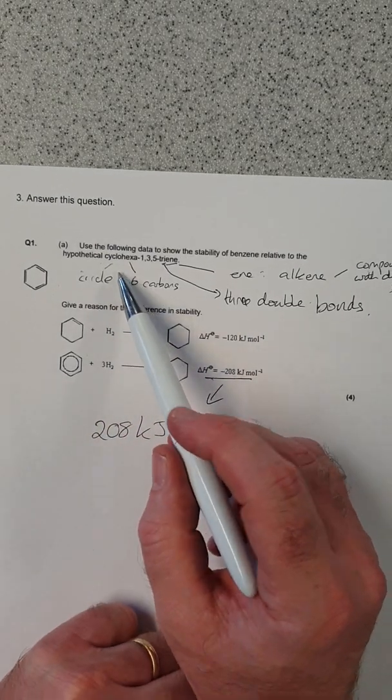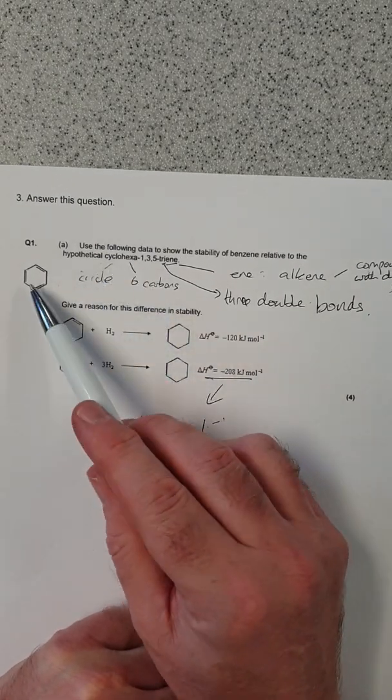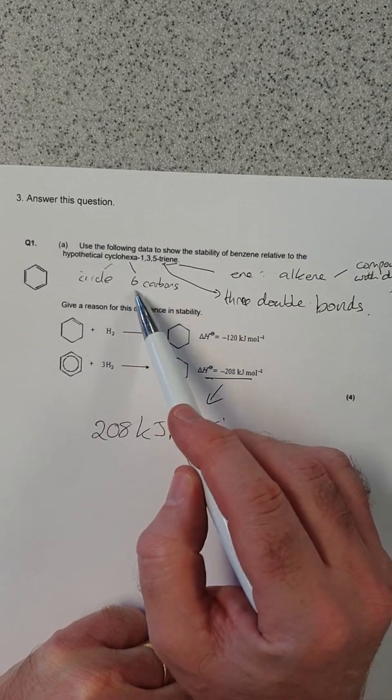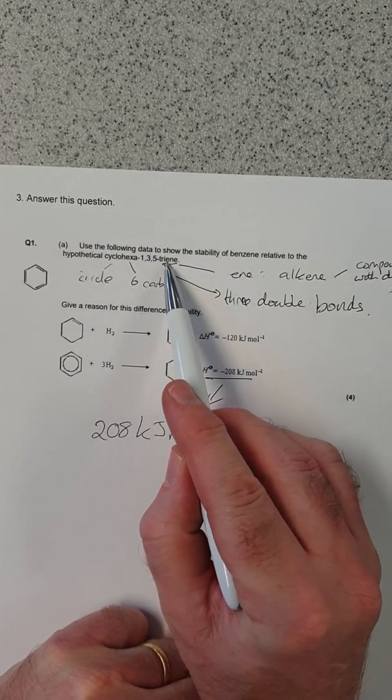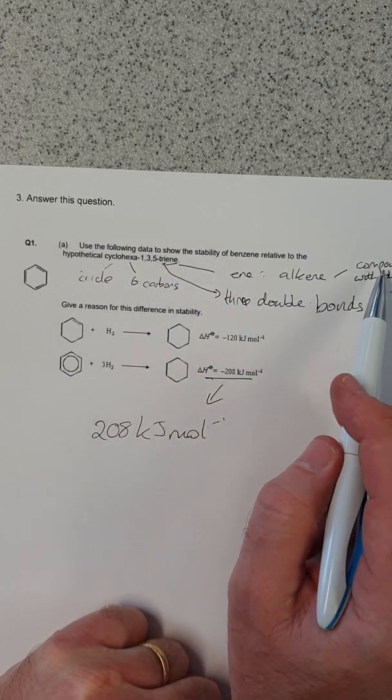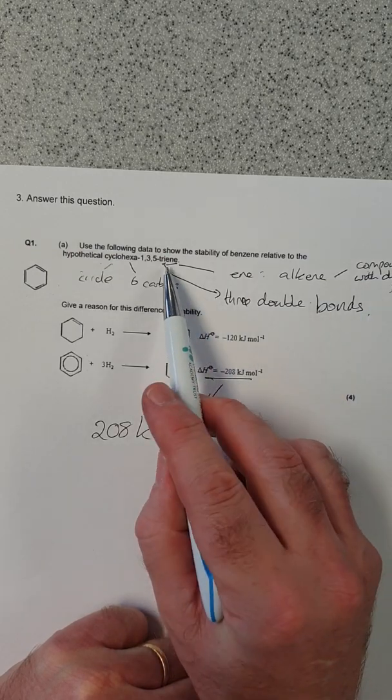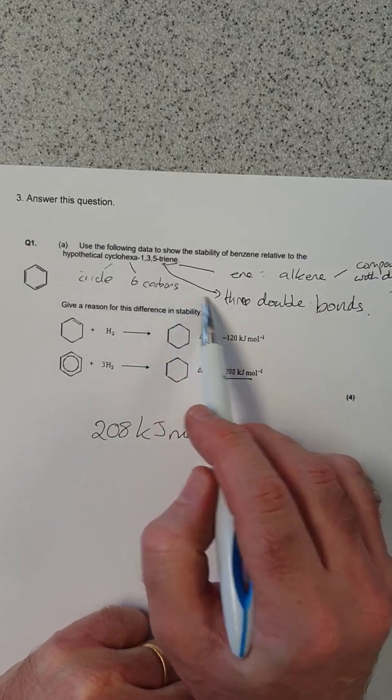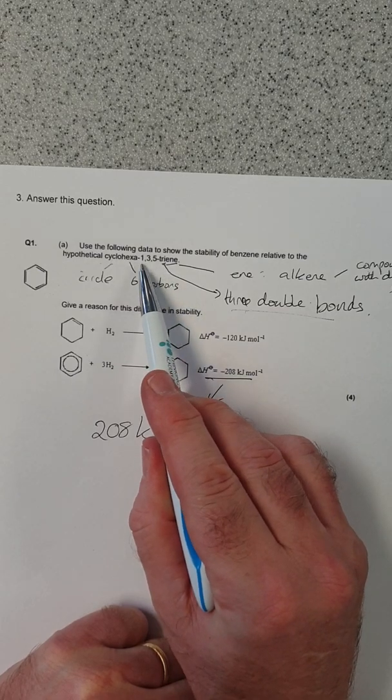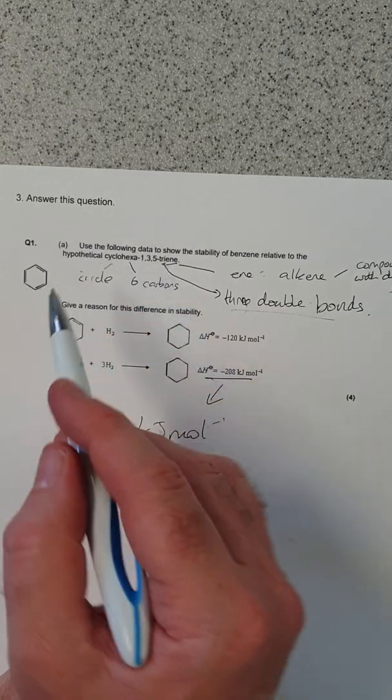So this word can be broken into parts. We've got cyclo, meaning it's in a circle. Hexa, so we've got six carbons. It's an ene, like an alkene, so it's got a compound that's got double bonds. How many double bonds? Well, it's triene, so that means it's got three double bonds. And those double bonds are in positions 1, 3, and 5.